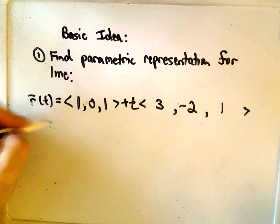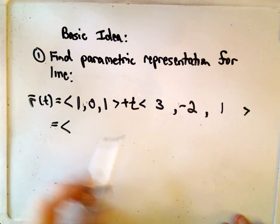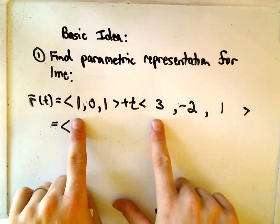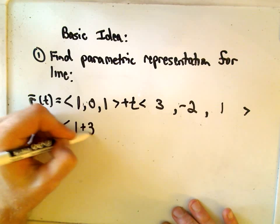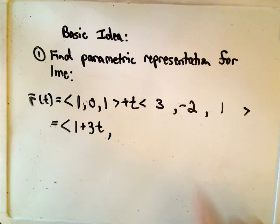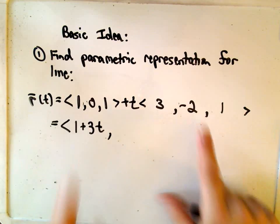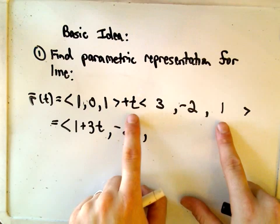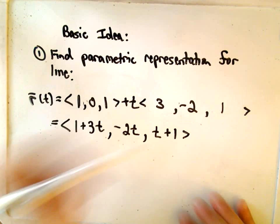Okay, so we could write this again. We distribute the t and then we add respective components. So we would get t times 3, which is 3t. And then if we add the first components, we would simply get 1 + 3t. If we do that for the middle component, we would get -2t + 0, which is simply -2t. And then we would get t times 1 plus 1, which would just be t + 1.